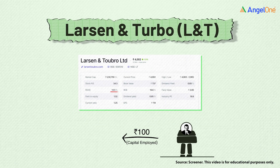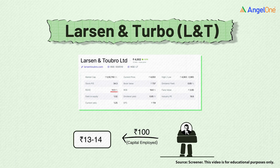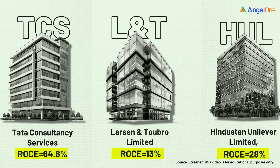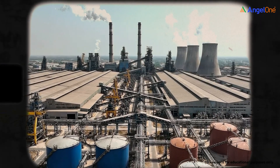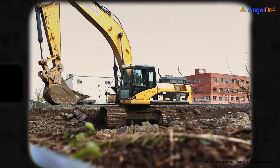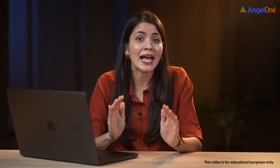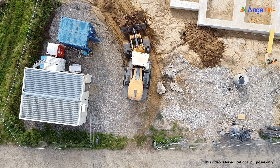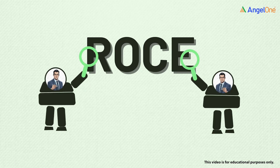Another great example is L&T. L&T's ROCE is around 13 to 14%, which means for every 100 rupees it invests, it earns about 13 to 14 rupees of profit before interest and tax. That might seem low compared to HUL or TCS, but L&T operates in the engineering and construction space — a highly capital-intensive sector requiring massive upfront investment in equipment, infrastructure, projects, and working capital. So a 13 to 14% ROCE for L&T is actually quite reasonable given its heavy asset base and scale of operations.